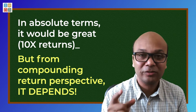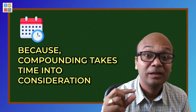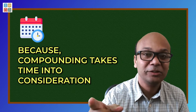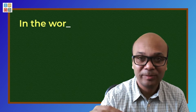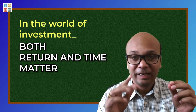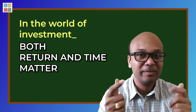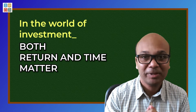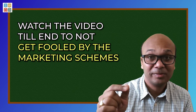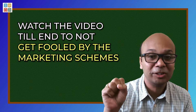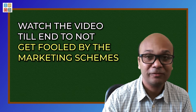Why depends? Because compounding takes into consideration how much time it takes for 1 lakh to become 10 lakhs. In the entire world, return and time — these two things are seen together. Those who ignore time always get misled by marketing brochures. In today's video, we will understand this so that you rarely get fooled in your personal finance life.